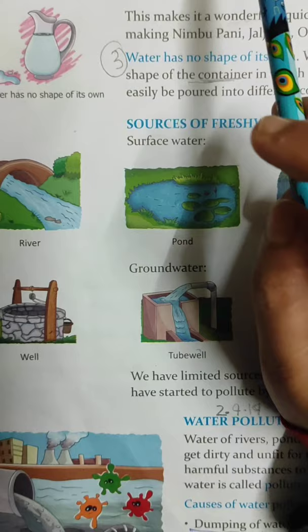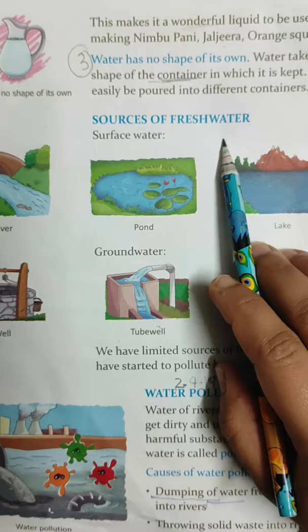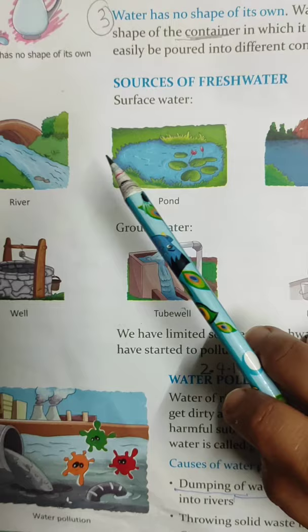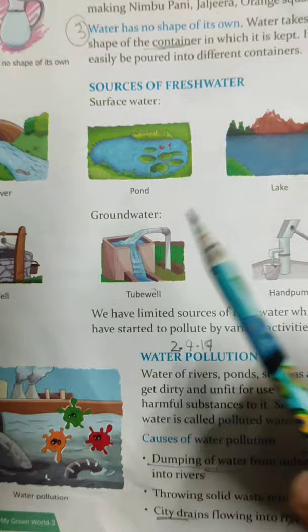Next is sources of fresh water — meaning where we can get water to use. We can use water from rivers, wells, ponds, tube wells, lakes, and hand pumps.